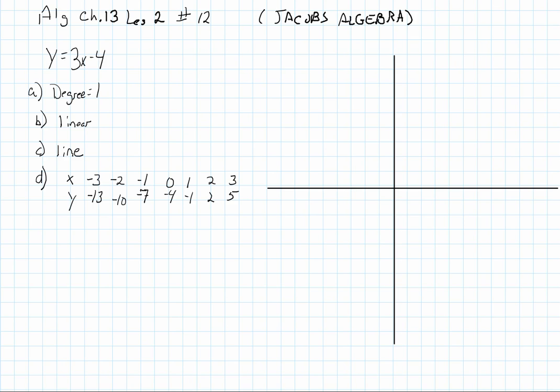We're looking here at Jacob's Algebra, Chapter 13, Lesson 2, where we're talking about polynomial functions and just some examples of what's going on here. The book may be a little confusing at times, but these are fairly simple questions. We're going to look at something in exercise set 3, and maybe it's more complicated than some of the other ones, but we have this equation here that's y equals 3x minus 4.